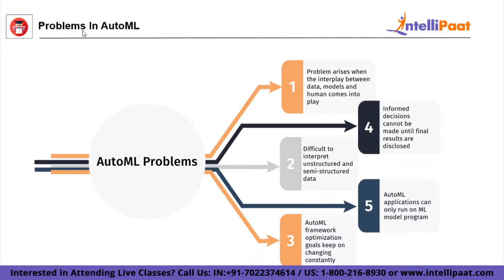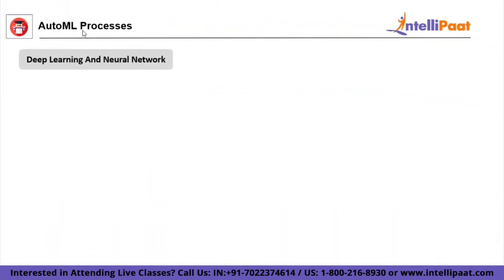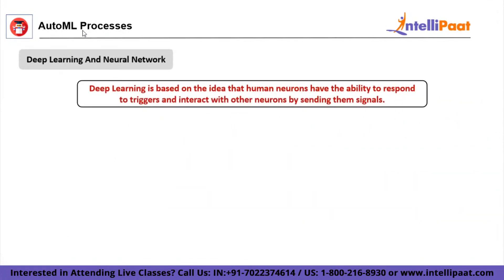Now moving forward, we'll talk about AutoML processes. Model selection, automation of the training process, hyperparameter optimization, and tuning are AutoML's most valuable features. This requires the use of various techniques. The first is deep learning and neural networks. This type of ML is based on the idea that human neurons respond to triggers and interact with other neurons by sending signals. This entity of millions of nodes is called a neural network. Nodes can deal with complex problems by splitting them into smaller tasks — that's the notion behind neural networking.